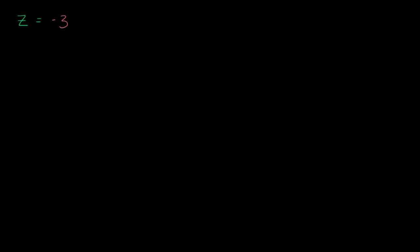Let's say that I have the complex number z, and in rectangular form, we can write it as negative three plus two i. So first, let's think about where this is on the complex plane.